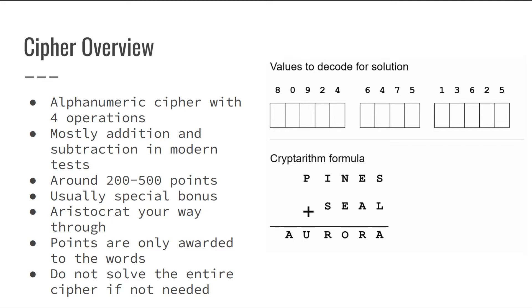Even though there are different operations, you will only be seeing subtraction and addition cryptarithms in modern tests. Cryptarithms on both tests are around 200-500 points while also being a special bonus. When you solve a cryptarithm, you usually stick to aristocrating your way through the problem instead of actually solving the cryptarithm. We will go over what this really means later in the video and do an example in a different one.